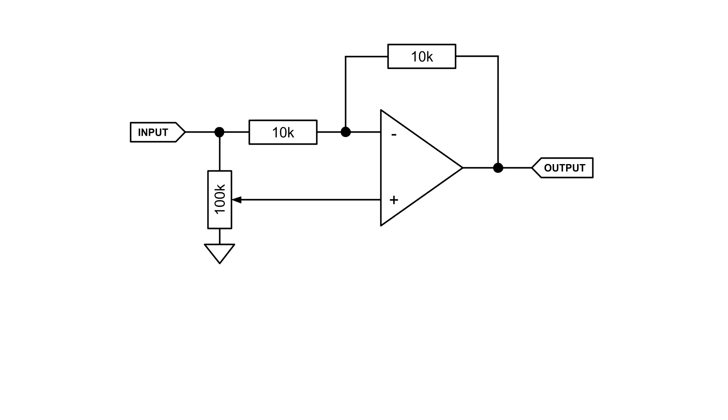The basic attenuverter looks as follows. The gain of an attenuverter is given as 2x minus 1, where x is the position of the potentiometer wiper from 0 to 100%, or 0 to 1.